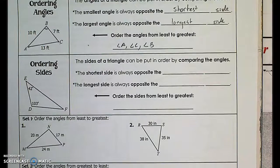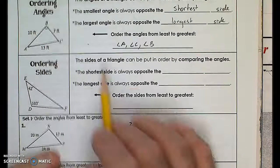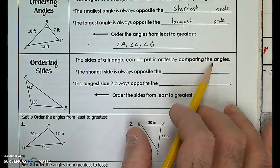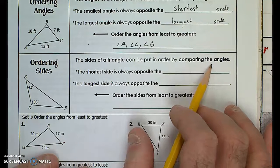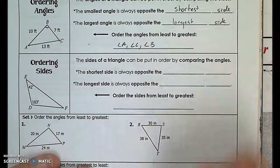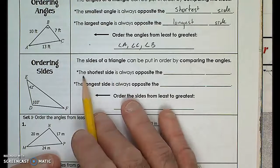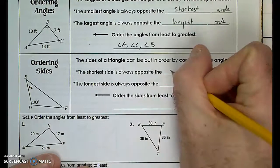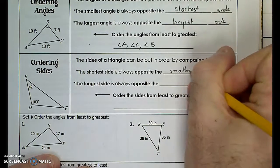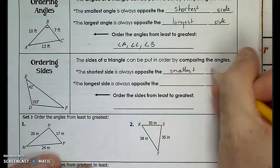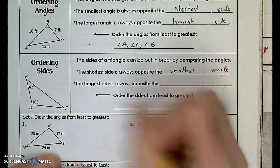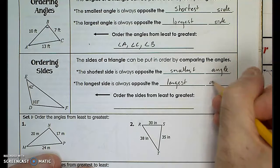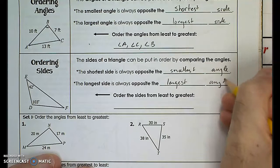The same thing applies the other way around. The sides of a triangle can be put into order by comparing the angles. If I know the angles but not the sides, can I order the sides by relative length? Yes. The shortest side is always opposite the smallest angle, and the longest side is opposite the largest angle.